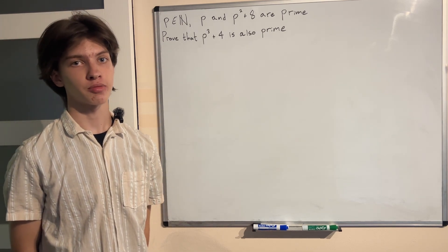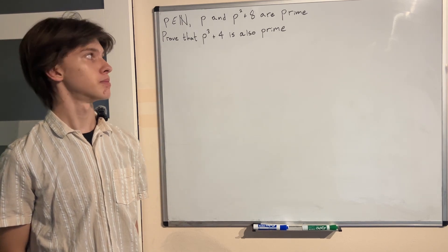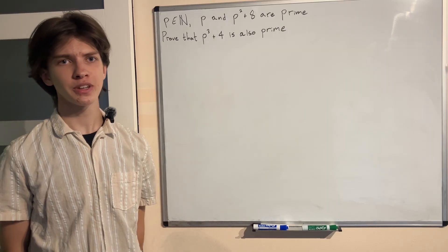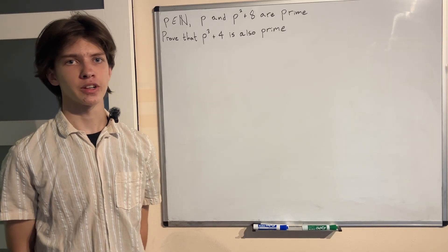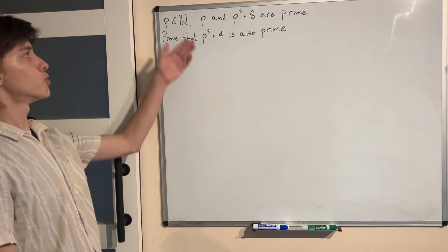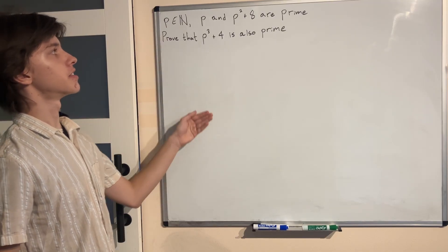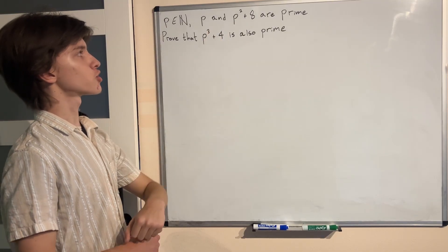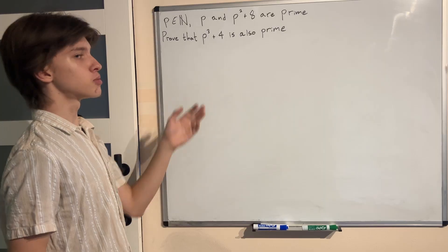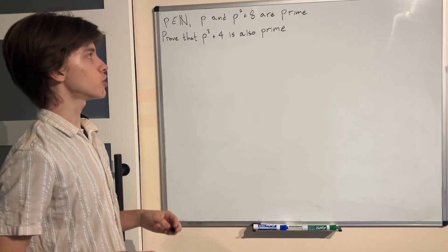So how I would recommend approaching this problem is to simply make a table of some values so we can at least get some sense of where the pattern is going. So here it's quite simple. p is always going to be prime and we can then test if p² + 8 is also prime and then see if p³ + 4, what we want to prove, is also prime.